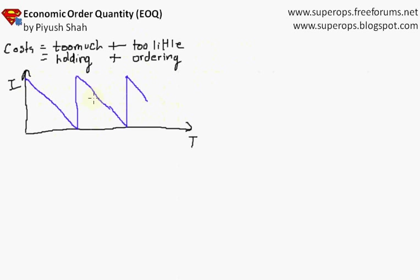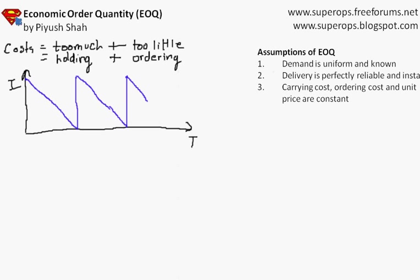This is the EOQ model. The EOQ model has lots of assumptions. It says the demand is uniform, you use at a constant rate and the rate is known. The delivery, as soon as I reach zero new material comes up, so it's perfectly reliable and instant. The holding cost or the carrying cost and the ordering cost are known and are constant, they don't change. Those are the assumptions that we have in EOQ model.